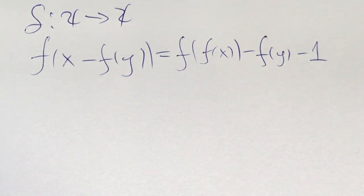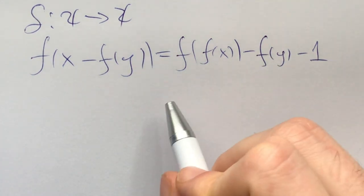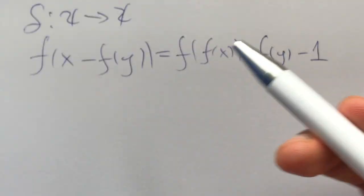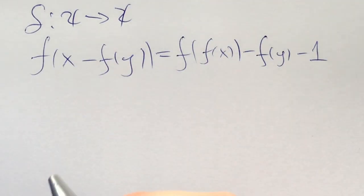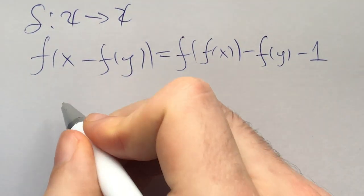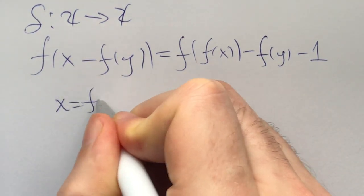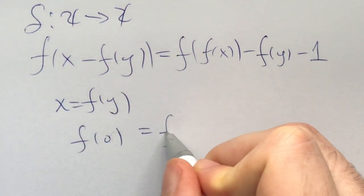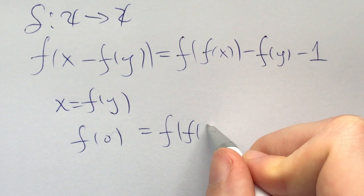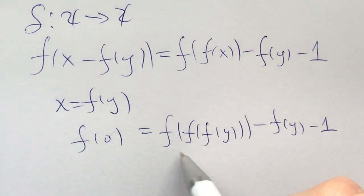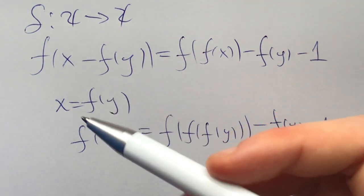Also, here we have x and y under the same f, sort of together influencing each other, and here they are free from each other. A common problem-solving strategy in functional equations is to try to cancel stuff out on sides of the functional equation, or make them constant. One way of doing that would be zeroing this out by plugging in x equals f of y.